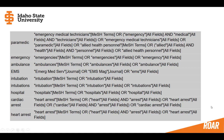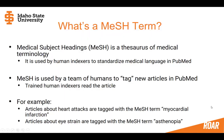Medical subject headings are all part of a hierarchical thesaurus of medical terminology. They're used by human indexers to tag and standardize medical language in PubMed, and indexers are trained to do this. So articles about heart attacks are always tagged with the mesh term 'myocardial infarction' — always the same terminology.